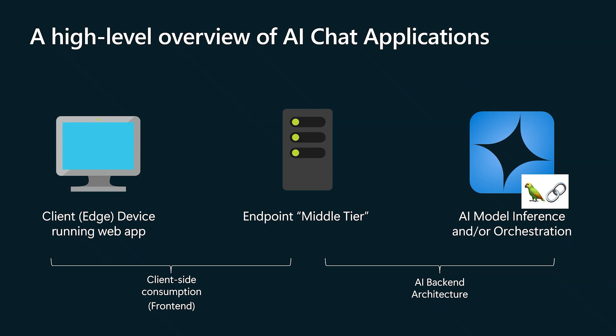The job to be done on the left side of the diagram is the client-side consumption or front-end story, ensuring the user can receive the output of the AI backend with a good user experience. The right side focuses on the AI backend, including inference, orchestration, fine-tuning, retrieval, deployment, and monitoring of your AI models. We've identified two key jobs: one to build high-quality user-facing applications, and one to ensure your AI backend service is provided to consume by either internal or external developers.